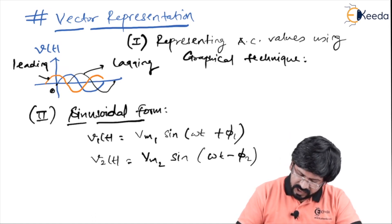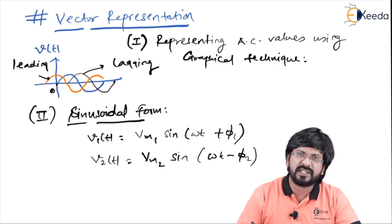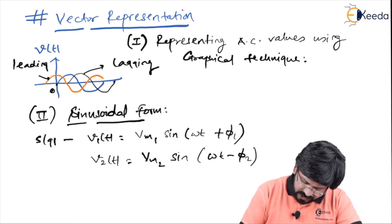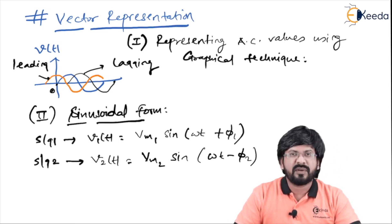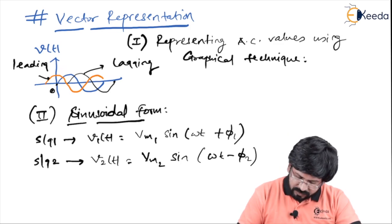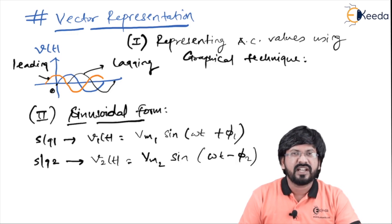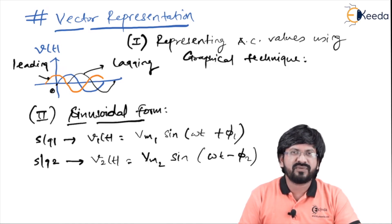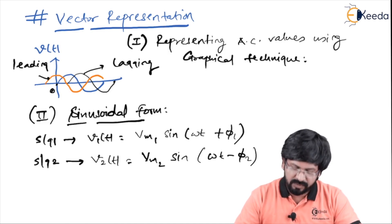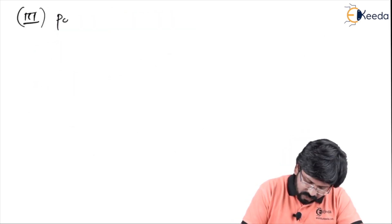The first example shows the signal is leading and the second shows it is lagging. Looking at sinusoidal form, we can determine the magnitude, frequency, and whether the signal is leading or lagging in phase. However, when it comes to calculation, operating with sine and cosine becomes quite difficult because one has to remember all trigonometric formulas. That's why we go for another form which is easier for calculation — the third form, which is the polar form.